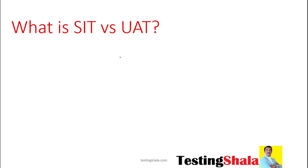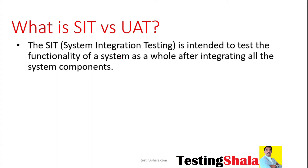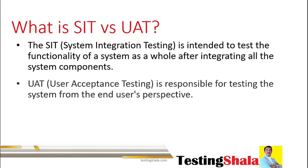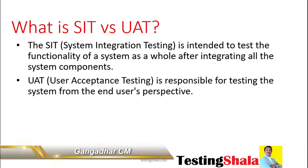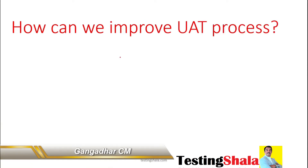What is the difference between SIT versus UAT? System Integration Testing versus User Acceptance Testing. System Integration Testing is where we test the overall integration aspects of system components across the application. But UAT, we concentrate more on the end-to-end perspective for the complete system which we are going to test.